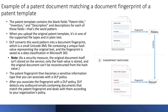Let's talk about an example. Here we have a patent document matching a document fingerprint of a patent template. The patent template contains blank fields such as patent title, inventors, and description — that's the word pattern. When you upload that original template to the service in one of the supported file types in plain text, DLP converts that word pattern into a document fingerprint, which is basically a small Unicode XML file containing a unique hash value representing the original text. The fingerprint is saved as a data classification in Microsoft 365. As a security measure, the original document itself is not stored in the service — only the hash value is stored, and the original document can't be reconstructed from that hash value.